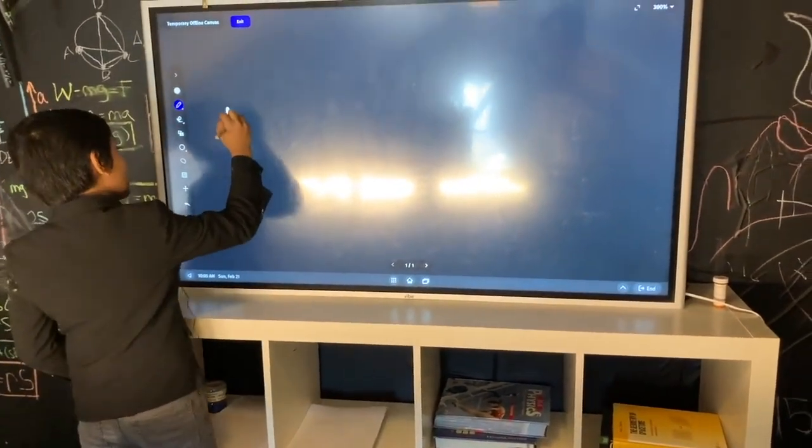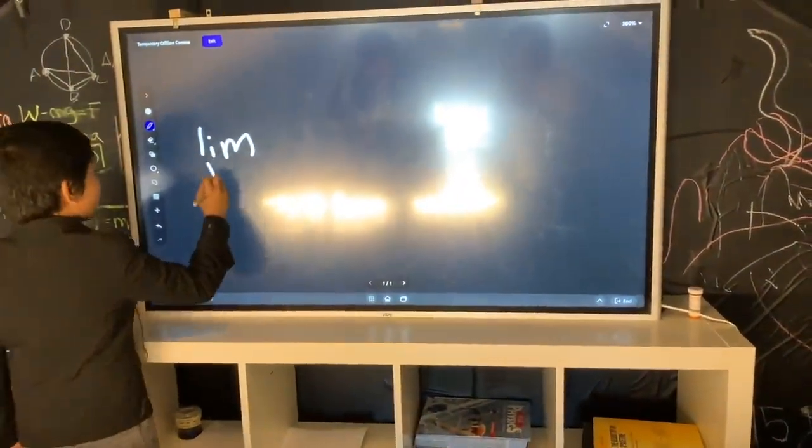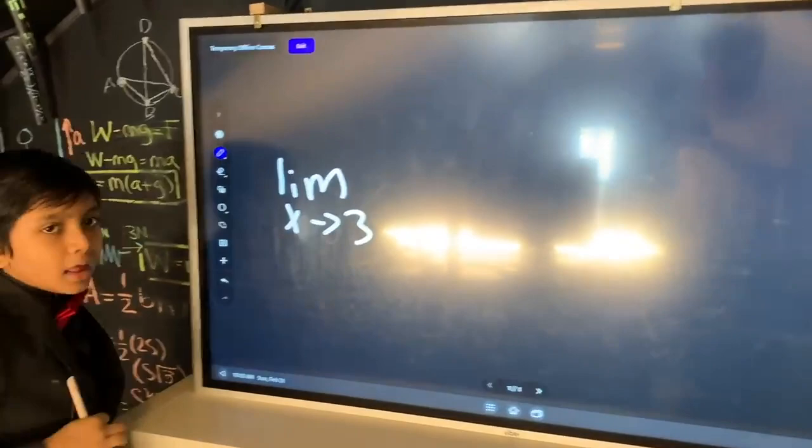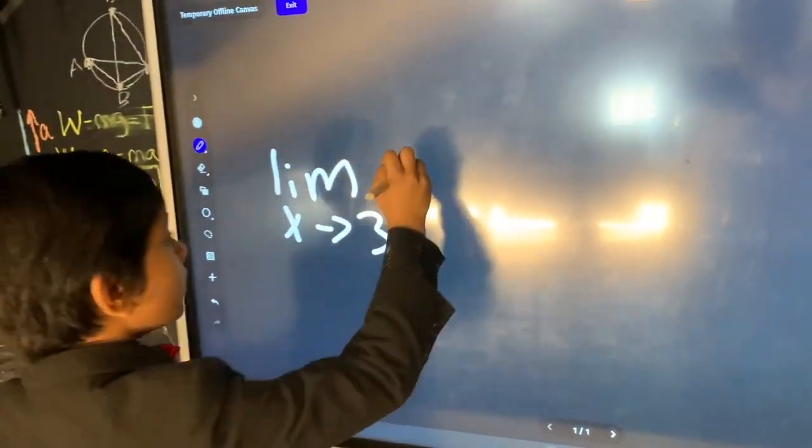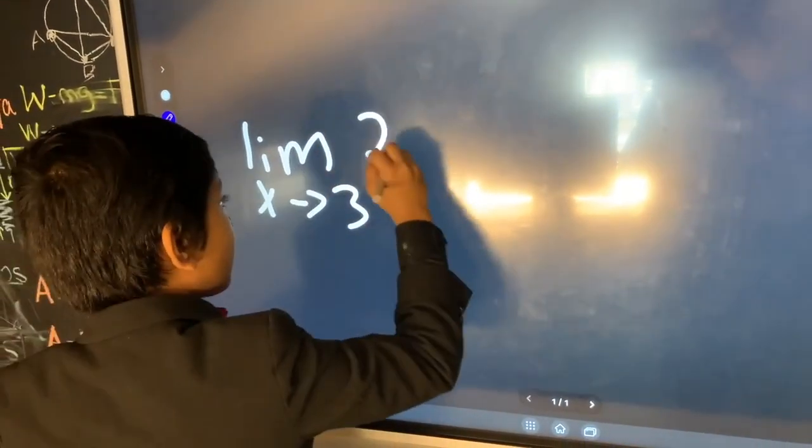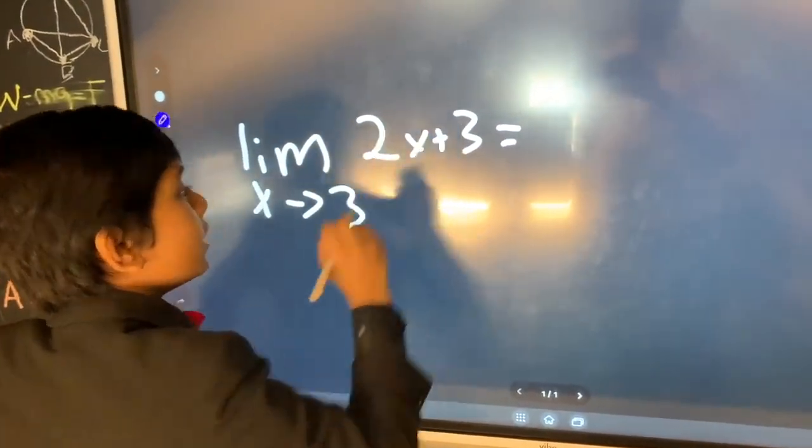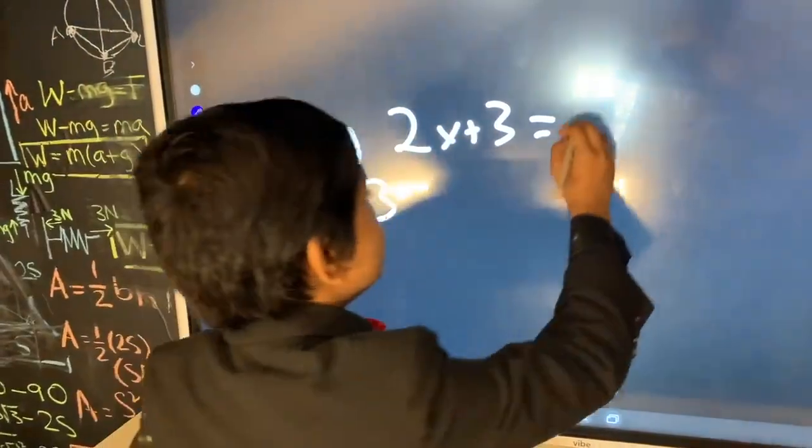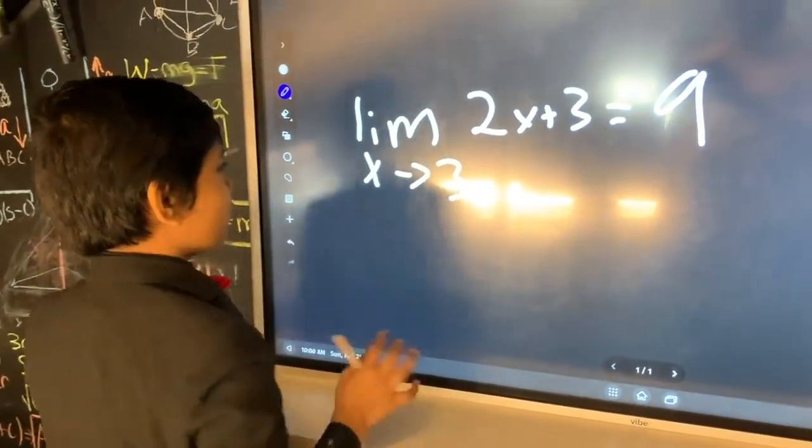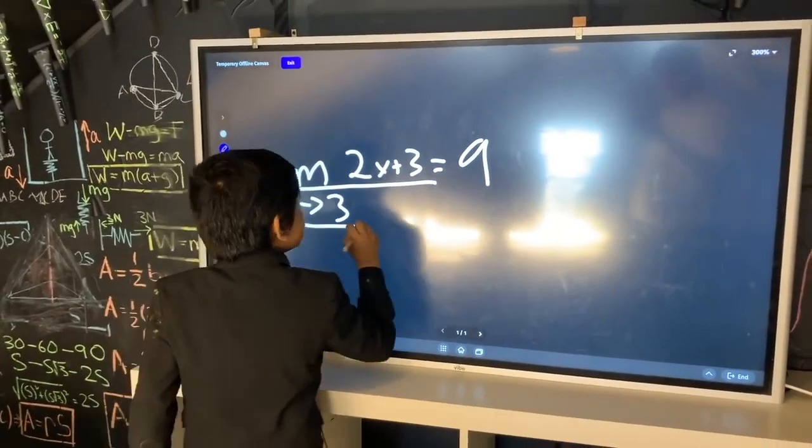So we can write it this way. This is basically how limits work. The limit as x approaches 3, the limit of y as x approaches 3 of 2x plus 3 is equal to - plug in 2 times 3 plus 3 is 6 plus 3 equals 9. It kind of has a rhythm to it. So I mean, the limit of 2x plus 3 as x approaches 3 is 9. That's how limits work.